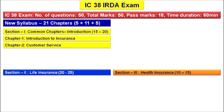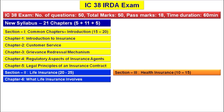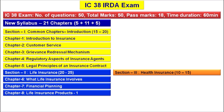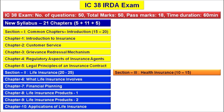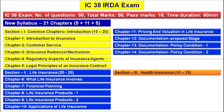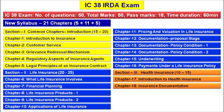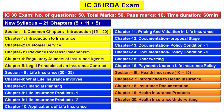Under Section 1 there is Chapter 1 Introduction to Insurance, Chapter 2 Customer Service, Chapter 3 Grievance Redressal Mechanism, Chapter 4 Regulatory Aspects of Insurance Agents, and Chapter 5 Legal Principles of an Insurance Contract. Section 2 Life Insurance covers financial planning, life insurance products, applications, pricing and valuation, documentation, underwriting, and payments under a life insurance policy. Section 3 covers health insurance including introduction, documentation, products, underwriting, and health insurance claims.